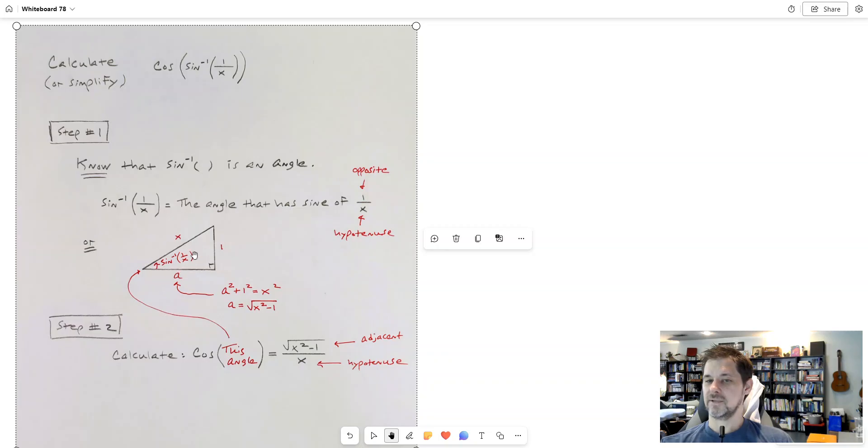Let's say there's the angle I'm talking about. What's the sine of that angle right there? It's opposite over hypotenuse. It's 1 over x. So right here, you see that? That's what sine inverse 1 over x is. It's this angle in this triangle.